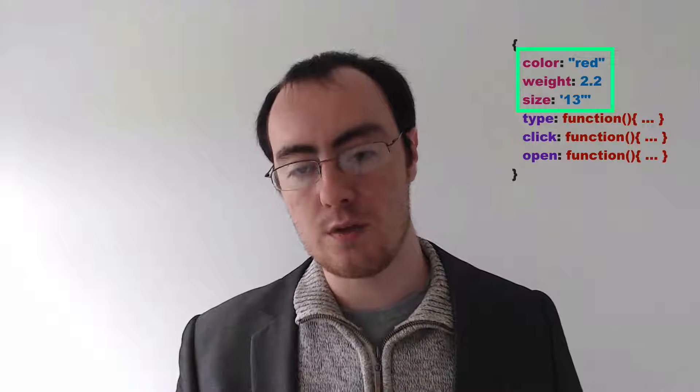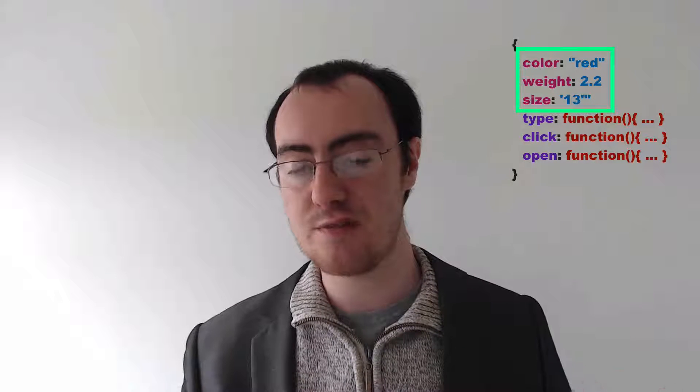With objects, what we have is properties. Properties are essentially variables — nouns and adjectives. When we have a variable inside of an object, a key and value pair, that is a property — it is a way to describe the object. For example, the colour is the noun, and the value, the adjective, is red. That's a variable, but because it's inside of an object, we call it a property.